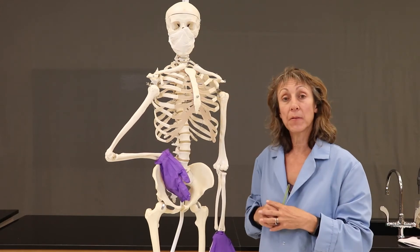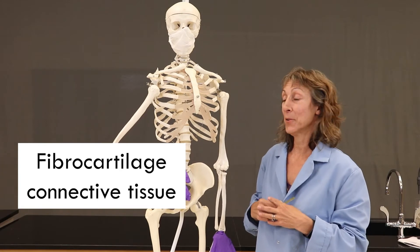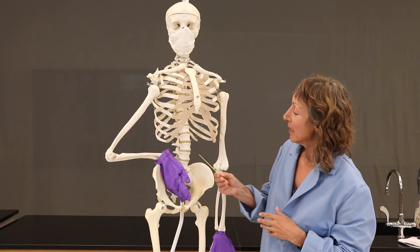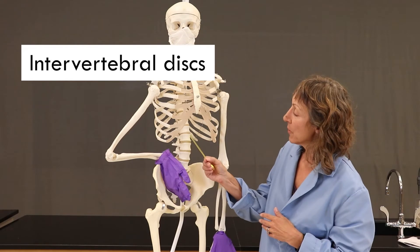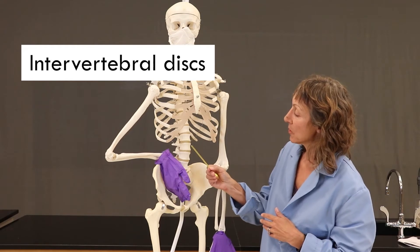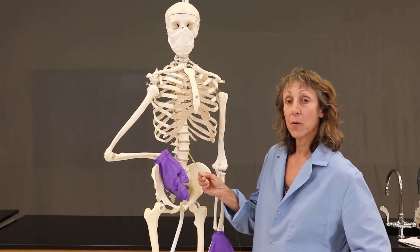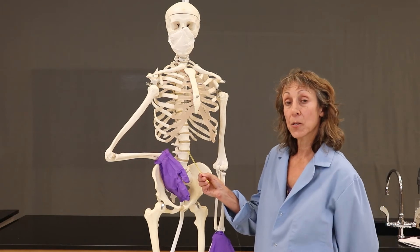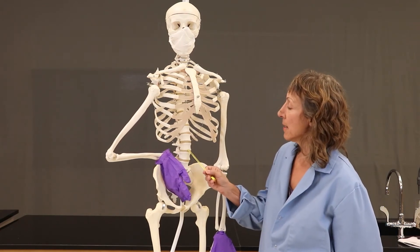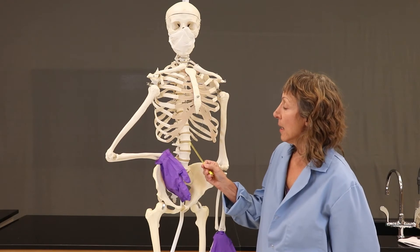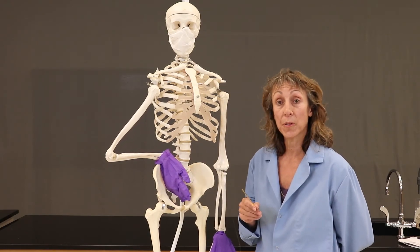We also have some nice fibrocartilage that we can look at on this model. The intervertebral discs between the bones of the vertebrae are made of primarily fibrocartilage — the strongest cartilage in your body. And they are a shock absorber between these bones.